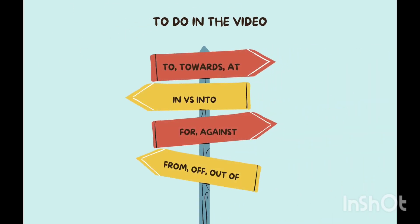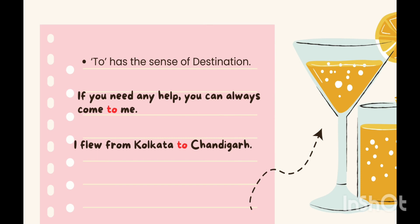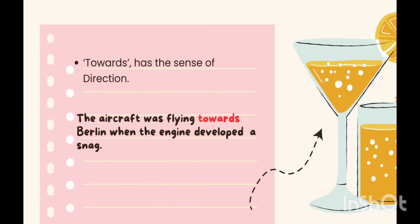Let's start with the common confusion between 'to' and 'towards.' See these sentences: 'If you need any help, you can always come to me,' or 'I flew from Kolkata to Chandigarh.' This implies 'to' has the sense of destination. On the other hand, 'towards' holds the sense of direction. Example: 'The aircraft was flying towards Berlin when the engine developed a snag.'